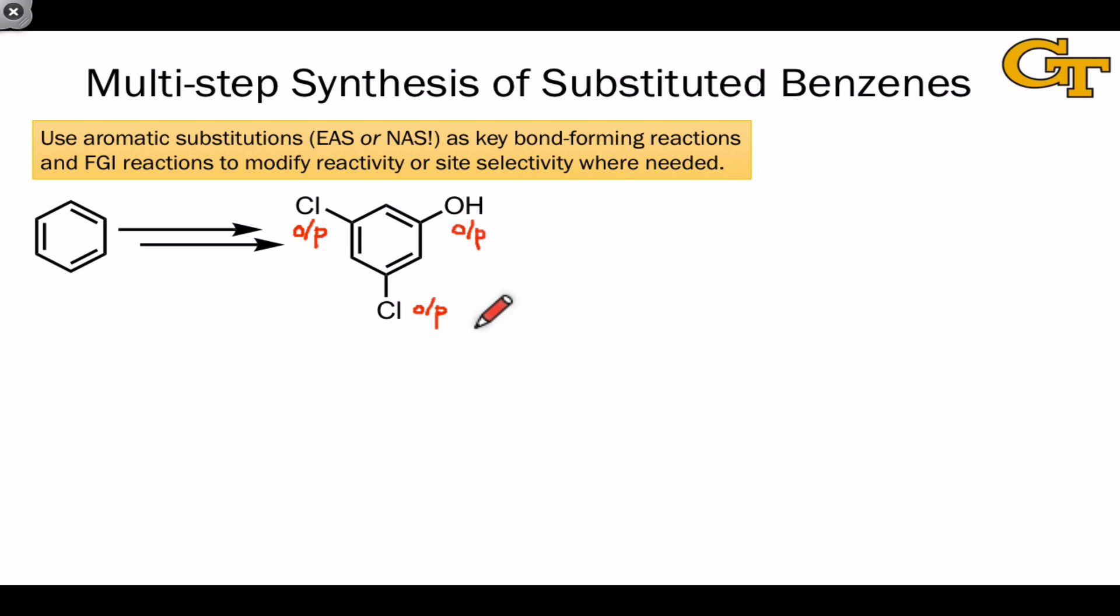We can get any two of these groups on in a meta-relationship, provided we can work backwards to a synthetic intermediate containing a meta-directing group. And the chlorines look like good candidates, since we can simply halogenate with two equivalents of chlorine in order to install those in a meta-relationship.